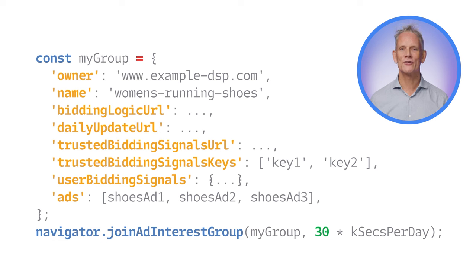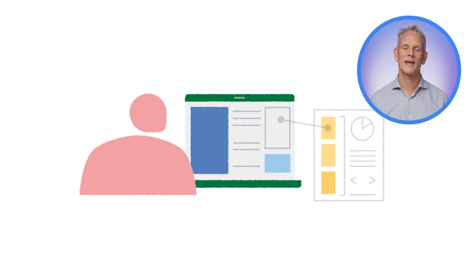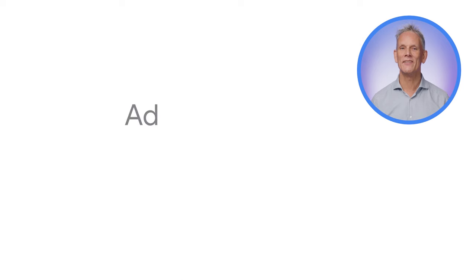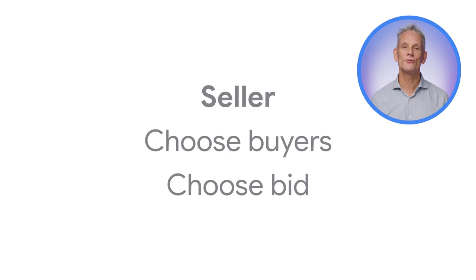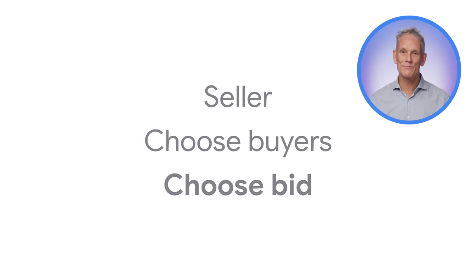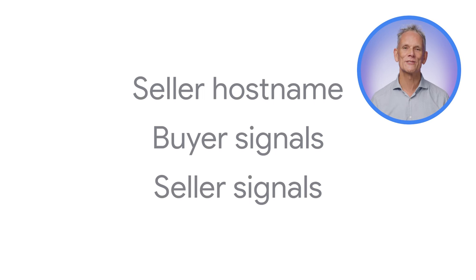The buyer can also add contextual data to the interest group, which becomes available when the buyer's bidding logic is executed in a secure environment. Later on, the user visits a site that displays ads, such as a news publisher, and the user's browser runs an auction to choose an ad. The seller in this auction might be the site itself or a third party acting on its behalf, such as a supply side ad platform. The buyers are third parties bidding for the site's ad inventory — the space where ads can be displayed — such as demand side platforms acting on behalf of advertisers. The seller initiates the ad auction by calling runAdAuction, with data including the buyers participating in the auction, the seller's contextual data, the location of the seller's ad scoring logic, and the location of the seller's real-time signal server.